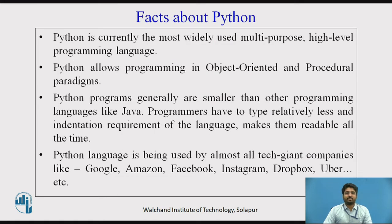We will see what are the facts about Python. Python is currently the most widely used multipurpose, high level programming language. Python allows programming in object oriented as well as procedural paradigms. Python programs are generally smaller than other programming languages like Java. Programmers have to type relatively less, and the indentation requirement of the language makes them readable all the time.